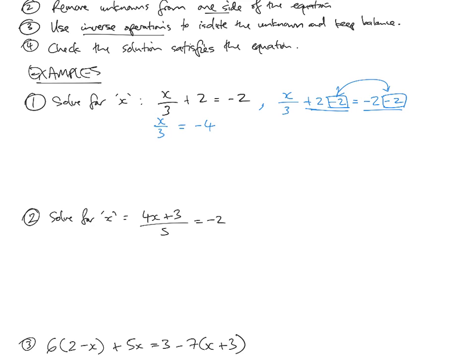Now we need to get rid of the divide by 3. What's the opposite of dividing something by 3? Timesing by 3. So I'm going to times x on 3 by 3 — put that in a brick — and times the right side by 3 as well. 3 times by x on 3 is 3x on 3, and the right-hand side is negative 4 times by 3, which is negative 12. 3 on the top and 3 on the bottom cancel out to x only. So you're left with x on the left-hand side is equal to negative 12.